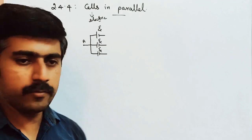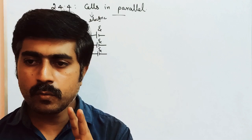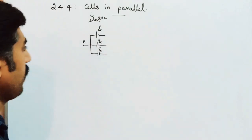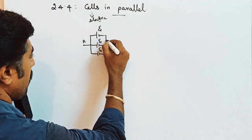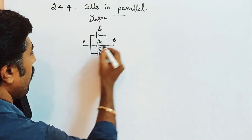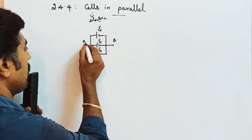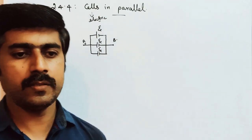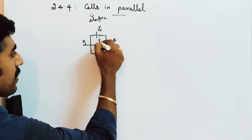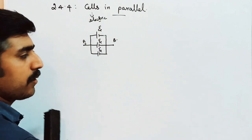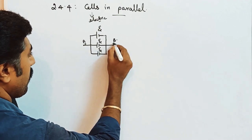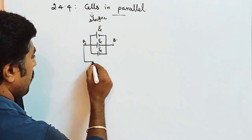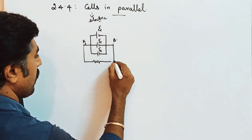The positive terminals are all joined together. Two or more cells joined together form a battery. The battery has two terminals — A is positive and B is negative. So A and B are the two terminals of a battery.